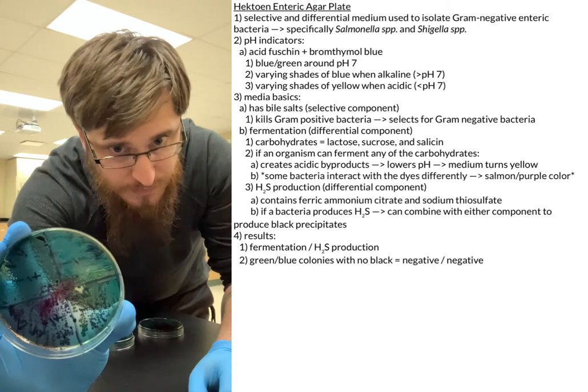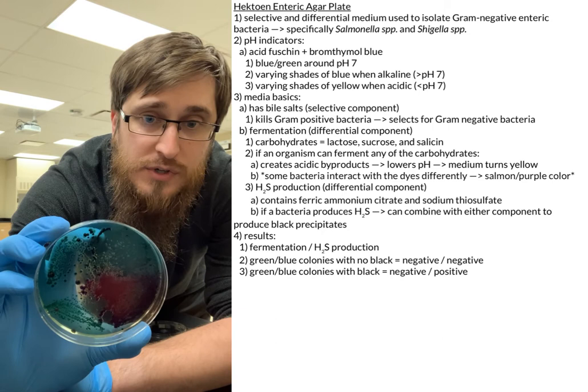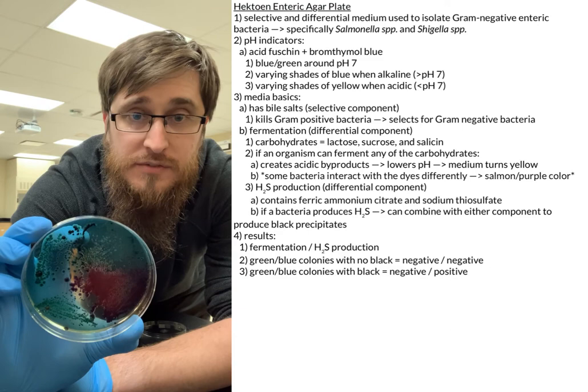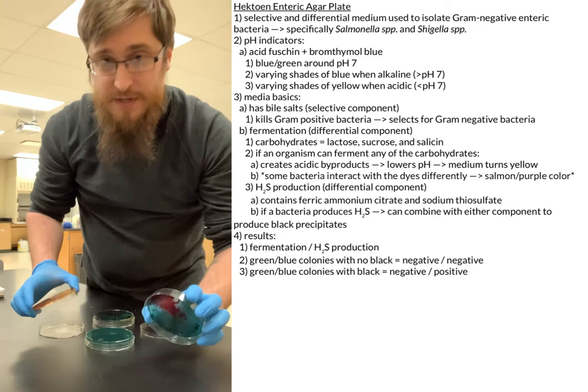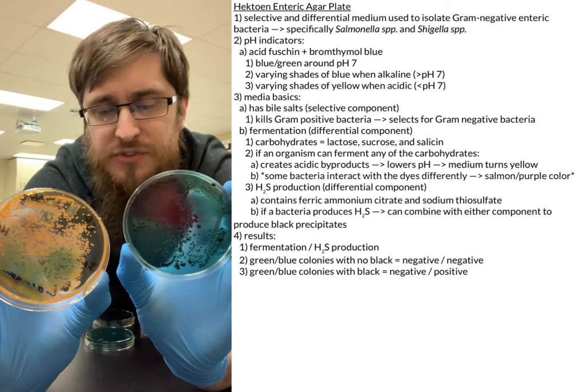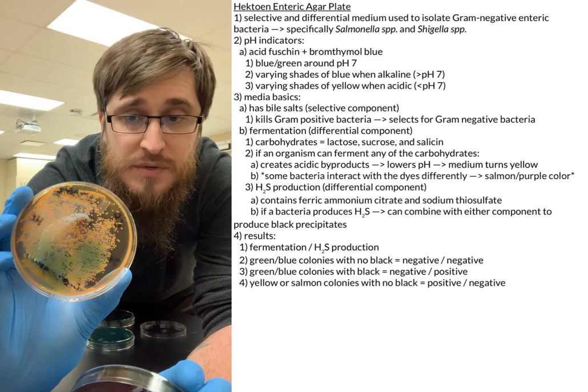If we see greenish-blue colonies with very dark or black dots inside of them, this would be a negative result for fermentation but a positive result for hydrogen sulfide production. Fermentation-positive results can appear really yellow, or a salmon-purple color. If you have all yellow or all salmon colonies with no black dots, that would be positive fermentation but negative hydrogen sulfide production.